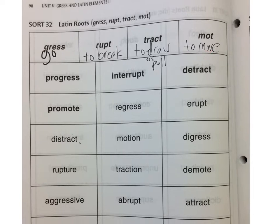So say you look at a word like progress. Pro means forward, gress means to go, so it means going forward — progress.